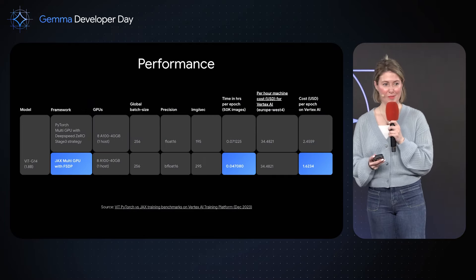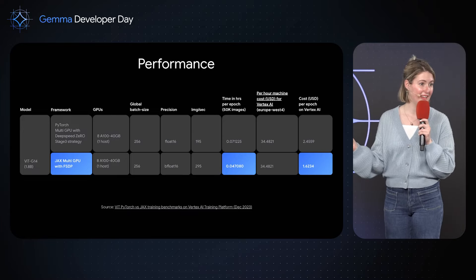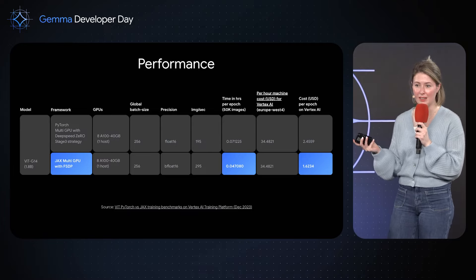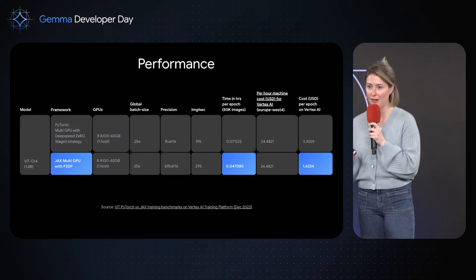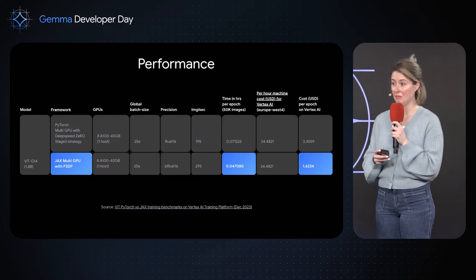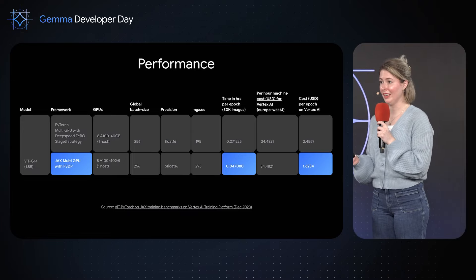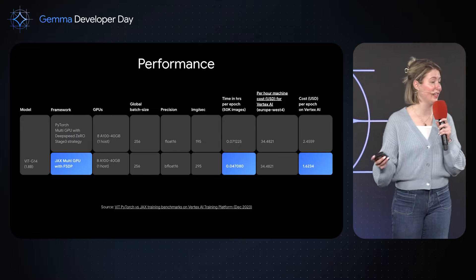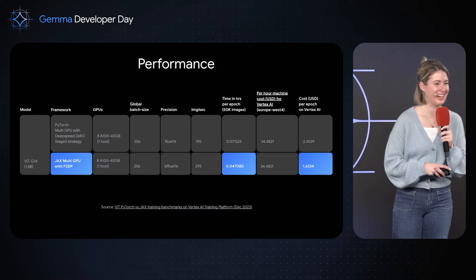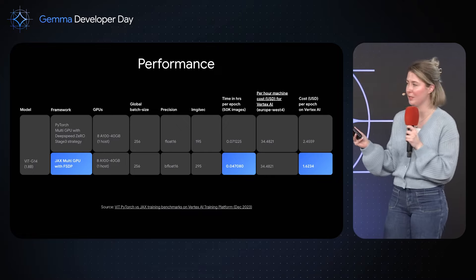Specifically, when talking about performance, I'd like to highlight the Visual Transformers study done late last year. Looking at two columns in particular — time in hours per epoch and cost per epoch — we saw that comparing JAX versus PyTorch, JAX was faster to run and cheaper to run. When developing a model like Gemma, where we're training on up to six trillion tokens of text, being efficient and fast with training time is incredibly important.